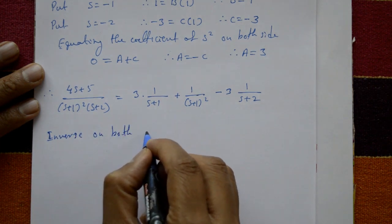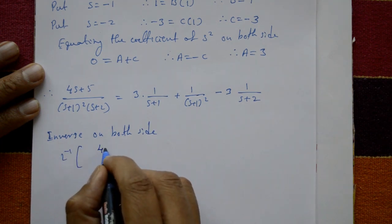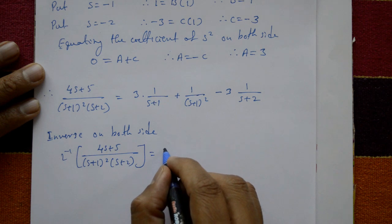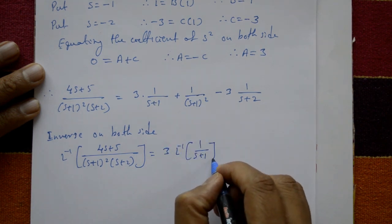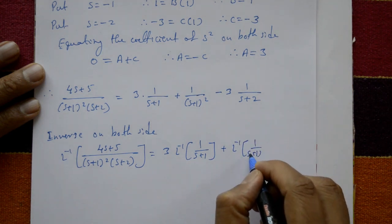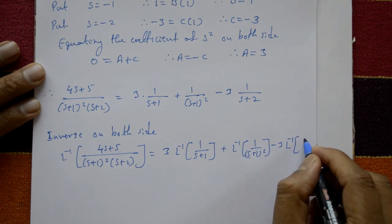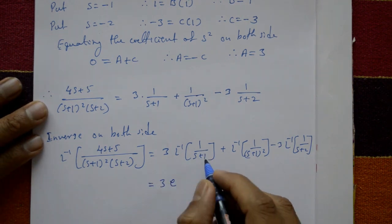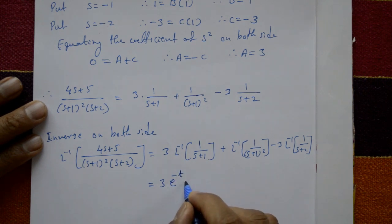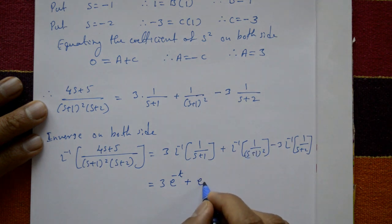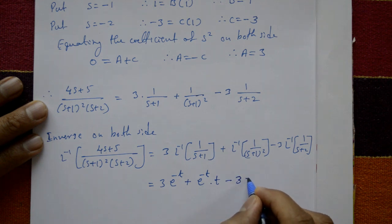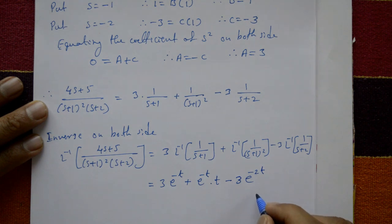Applying the inverse Laplace transform on both sides: inverse of (4s + 5) upon (s + 1) whole square into (s + 2) equals 3 times inverse of 1 upon (s + 1), plus inverse of 1 upon (s + 1) whole square, minus 3 times inverse of 1 upon (s + 2). Using standard inverse formulas with the shifting property: this equals 3e^(-t) plus e^(-t) times t minus 3e^(-2t). This is the required solution.